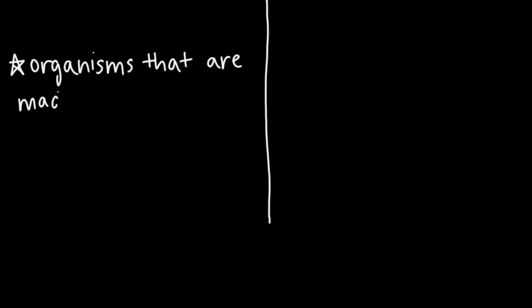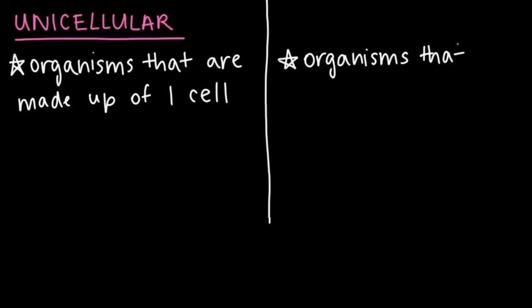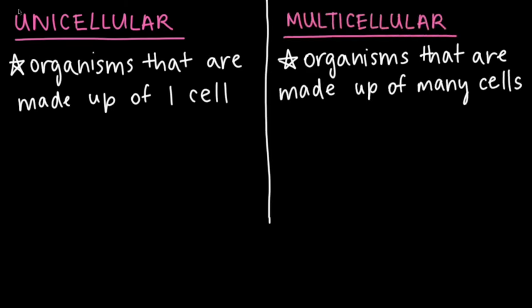So organisms that are made up of one cell are called unicellular, and organisms that are made up of many cells are called multicellular. Uni telling us that there is only one cell, and multi telling us that there are many cells.